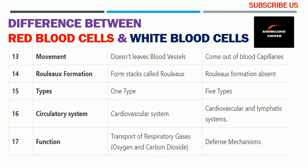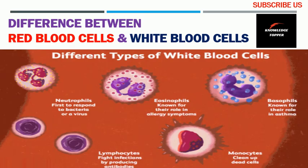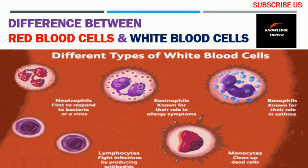The fifteenth basis is types — red blood cells have only one type, while white blood cells have five types. The five types of white blood cells are: neutrophils, which first respond to bacteria or viruses; eosinophils, known for their role in allergic symptoms; basophils, known for their role in asthma; lymphocytes, whose main function is to fight infections by producing antibodies; and monocytes, whose main function is to clean up dead cells.